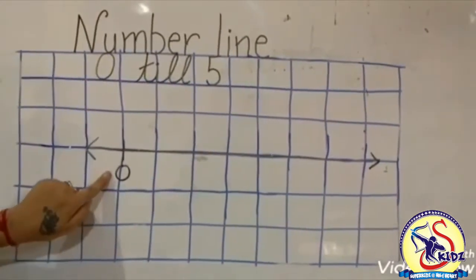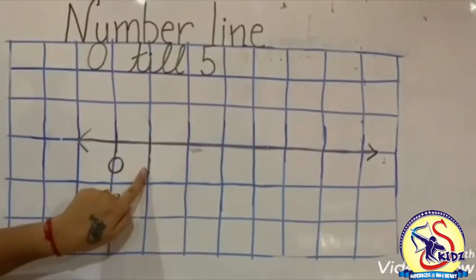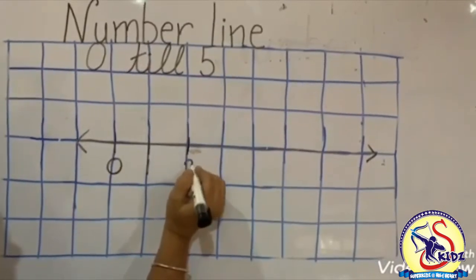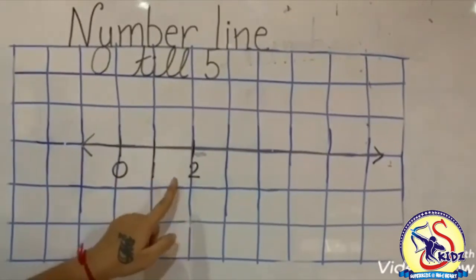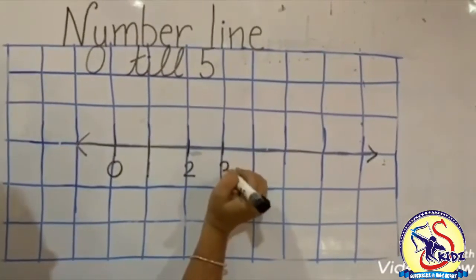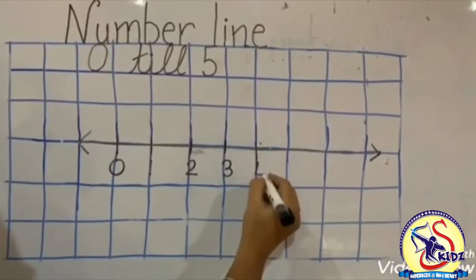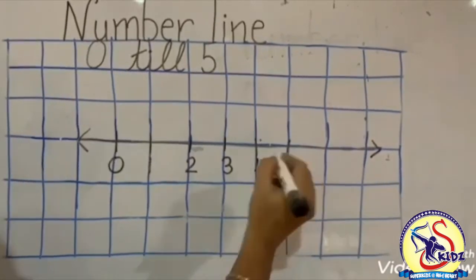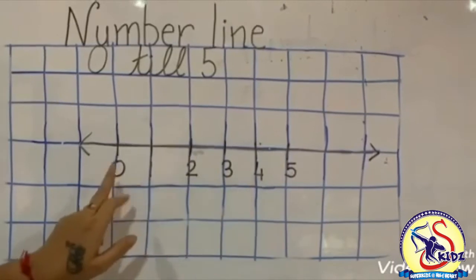0 after 1 — standing line, write here number 1. 1 after 2 — standing line, write number 2. 0, 1, 2. 2 after 3 — we will write here 3. 3 after 4, and 4 after 5. Now kids, we have drawn a number line 0 till 5.